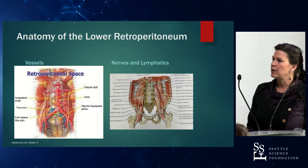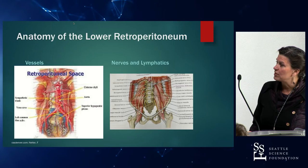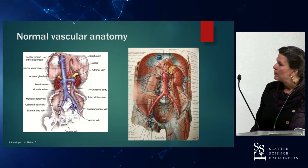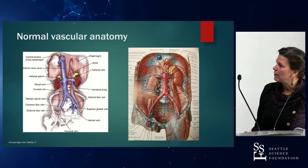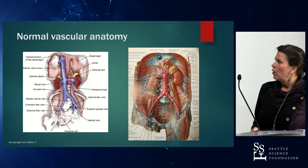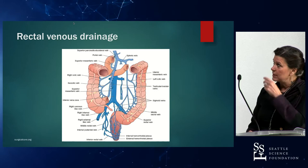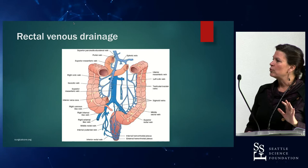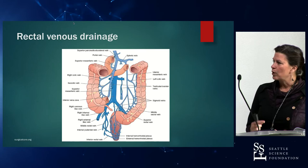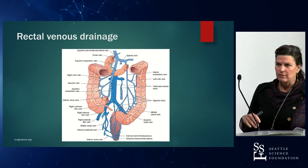Once you get into the retroperitoneum, you have to be aware of the various structures that could be damaged — retroperitoneal vessels, nerves, and lymphatics. We're all familiar with the normal vascular anatomy; the arterial anatomy is depicted on the right side and the venous anatomy on the left side, though I'll go into more detail later. One extra consideration is the rectal venous drainage, usually covered by the medial sacral vein and also the superior rectal vein, which can sometimes drape across the L5-S1 disc space and requires gentle teasing to push it inferiorly out of the way.